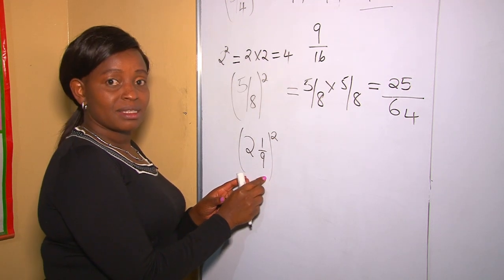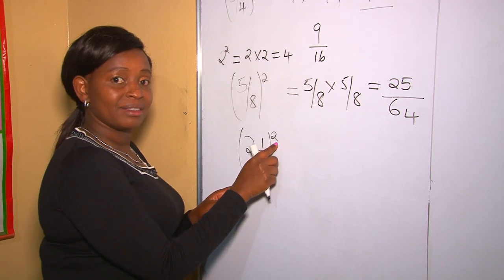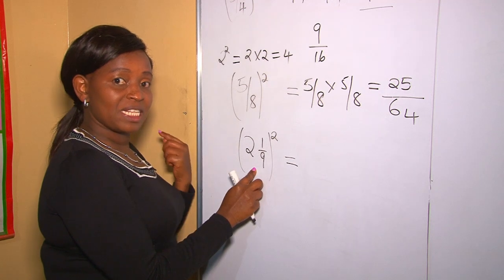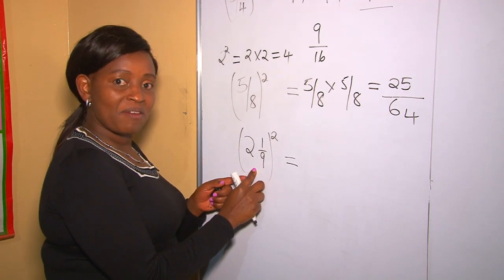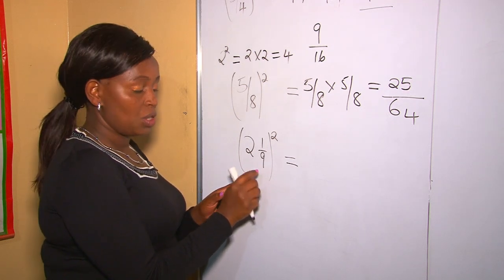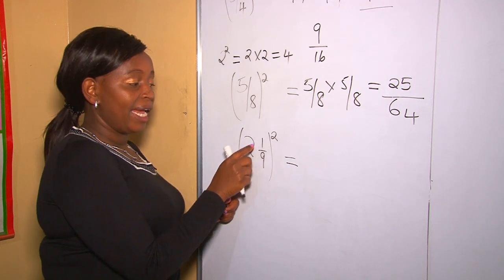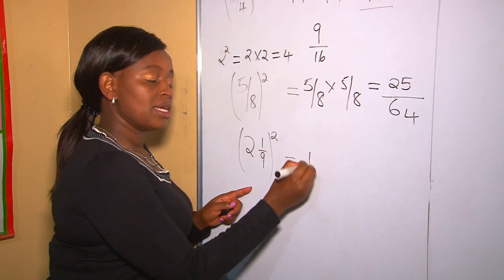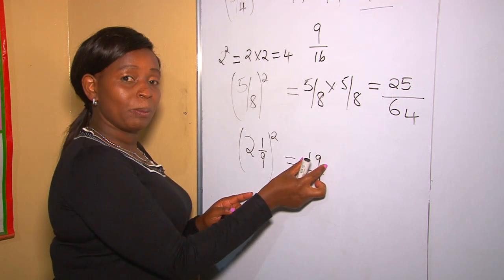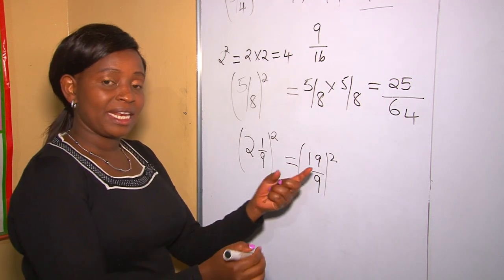Let's check our next example. This question is a mixed fraction. Before doing anything else, you must first change the mixed fraction to an improper fraction before squaring. From a previous lesson we learned how to change a mixed fraction into an improper fraction. So 9 multiplied by 2 is 18, and 18 plus 1 is 19, giving us 19 over 9.